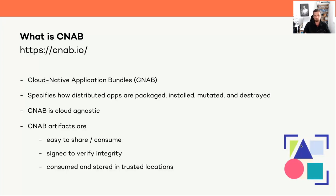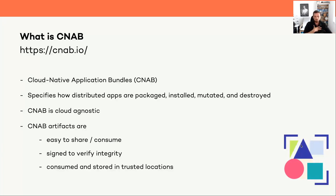The CNAB spec enforces cloud agnosticism — every tool that implements the spec has to be cloud agnostic. If we end up with a CNAB-compliant bundle, it's easy to share and easy to consume. We can sign it to ensure a certain level of integrity — as the bundle publisher and the consumer can look at the hash and ensure the bundle was not modified during transport from the trusted location to the place where it should be installed.